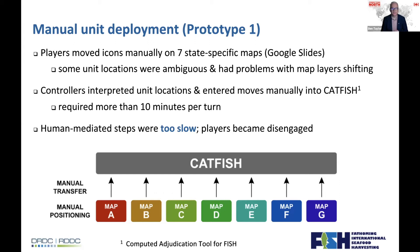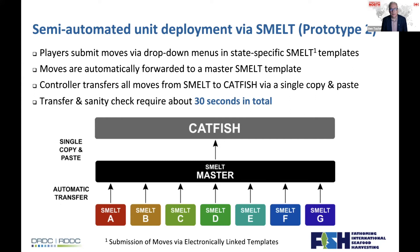In Prototype 1, players created their own maps with icons and the control team had to copy or code everything into a tool called Catfish — a computer adjudication tool for FISH — where Catfish would calculate or sample detection probabilities to determine who detected what. The problem was it took at least 10 minutes to transfer the data in, which was pure downtime for players. So in Prototype 2 we created a tool called Smelt — Submission of Moves by Electronic Link Templates.